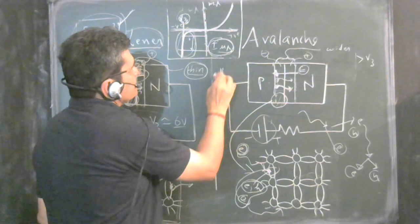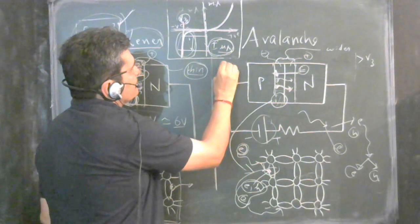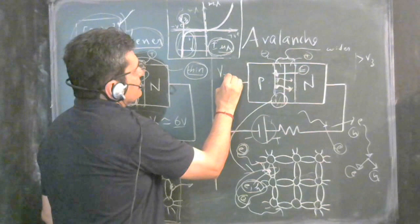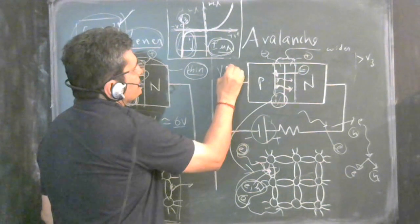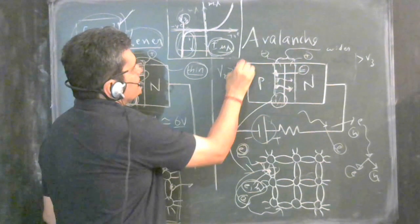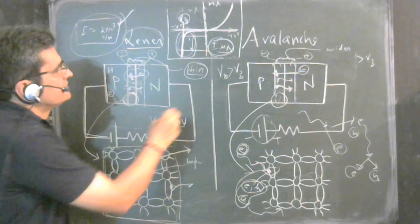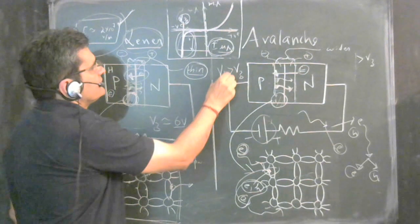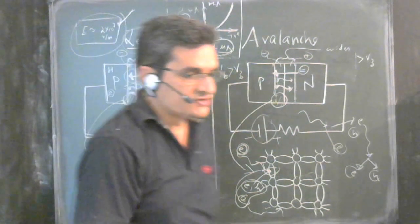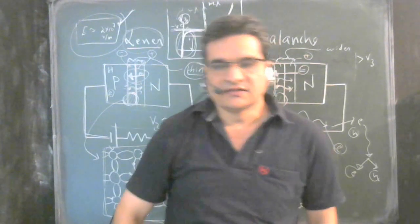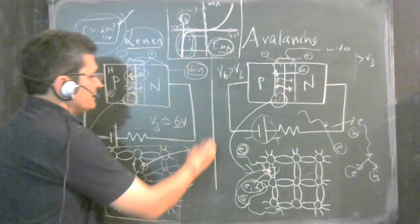In the case of avalanche breakdown, the breakdown voltage is greater than the Zener breakdown voltage, which is about 6 volts. Avalanche breakdown happens at a higher voltage.